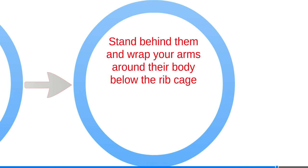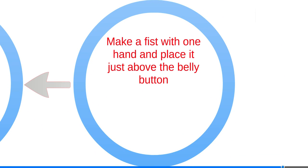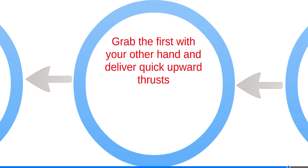Stand behind them and wrap your arms around their body below the ribcage. Make a fist with one hand and place it just above the belly button. Grab the fist with your other hand and deliver quick upward thrusts.